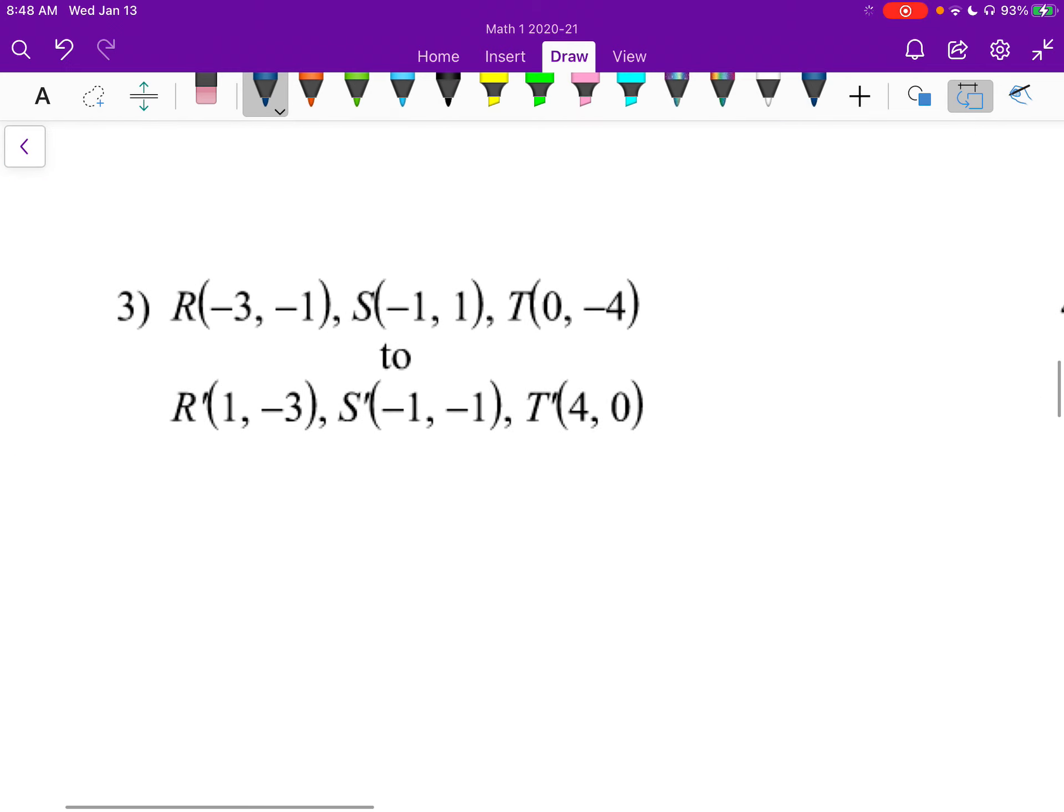All right, number 3. Again, I want to just look at one of these. r is at negative 3, negative 1, and it turns into 1, negative 3. Now, just as a side note here, for most of these, because we're doing rotations and sometimes it deals with negatives, I'm not going to deal or I'm not going to pick one that has a 0 in it, right? So whenever you're picking your points, you might not be able to pick the first one. This one, it turns out, is where we could pick the r. But if it has a 0, don't use that one, right? Because then you can't tell if the 0 went negative, right? Because negative 0 and 0 are the same thing.